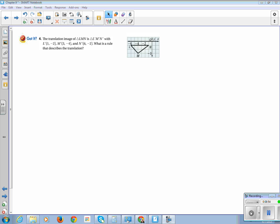So we're going to look at this triangle L, M, N. And its translation is L prime, M prime, N prime, with L1 being 1, negative 2, M prime being 3, negative 4, and N prime being 6, negative 2. What is the rule that describes the translation? So what I'm going to do is I'm going to write L, M, and N, the coordinates, and see if I can't find a pattern when I relate it to the image.